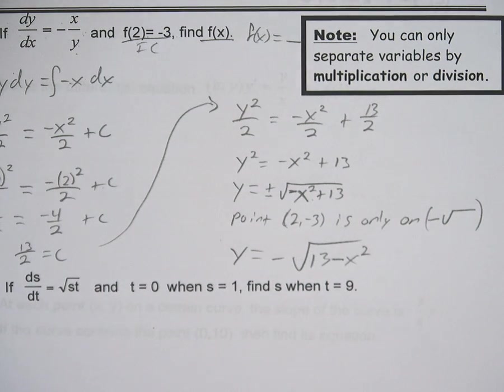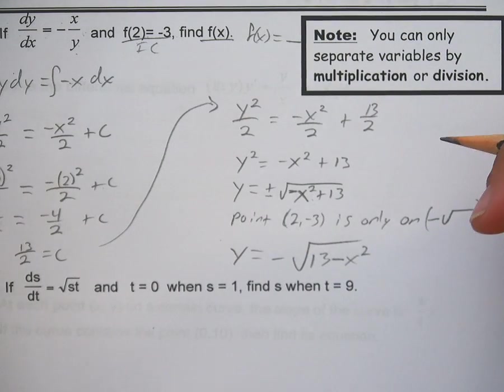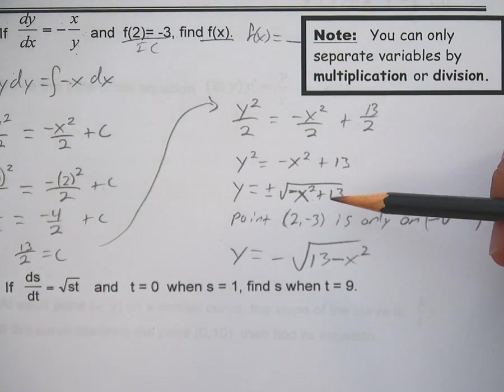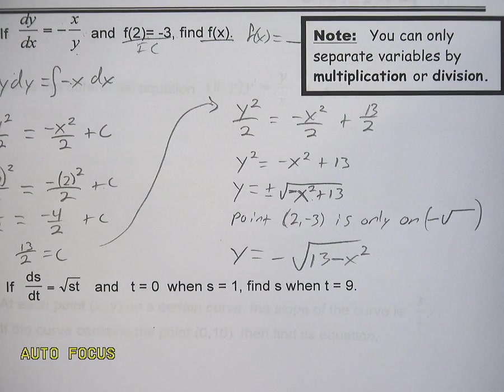So y is going to be the negative square root of 13 minus x². You always have to go back to check your initial condition and make sure that it fits with your equation. If I use the positive side of this, that -3 is not on there.